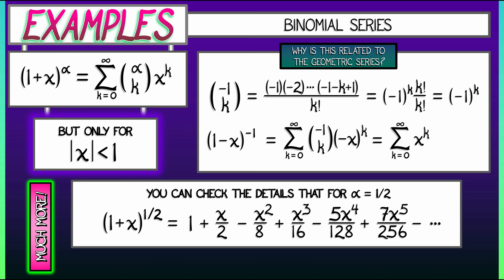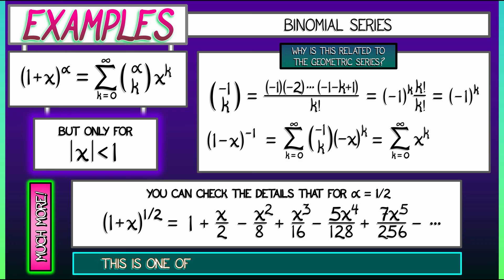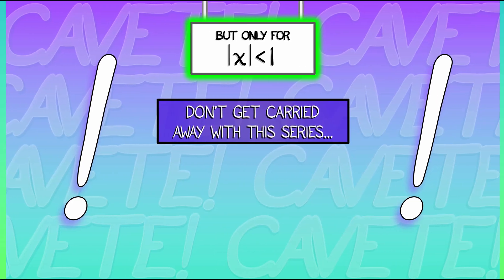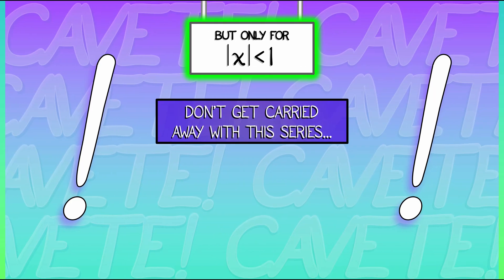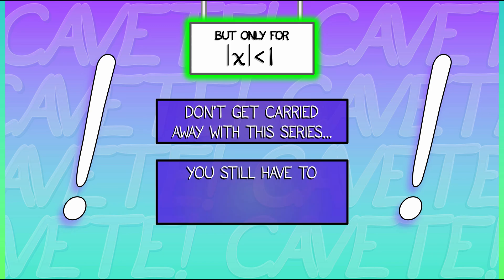You got to be careful with that convergence domain, right? If we let x be less than negative 1, we got square root of a negative number. That ain't going to fly. This is really one of the most useful series that we are going to encounter. But don't get carried away with this one. You still got to be careful to respect the domain of convergence. That's the one thing to be really careful about with the binomial series.